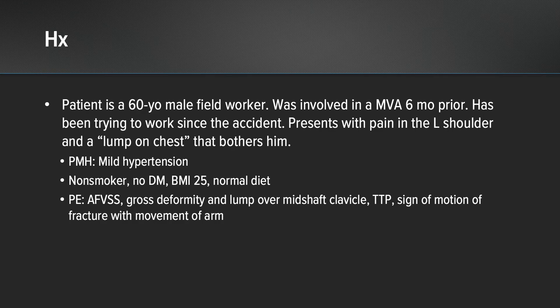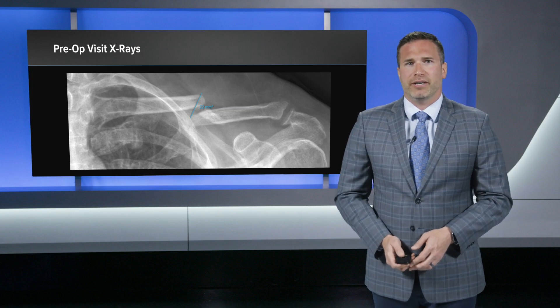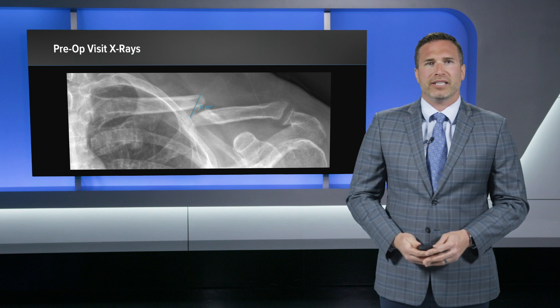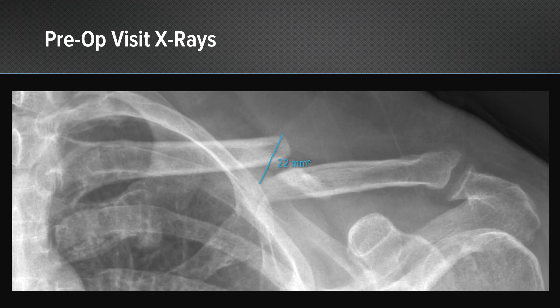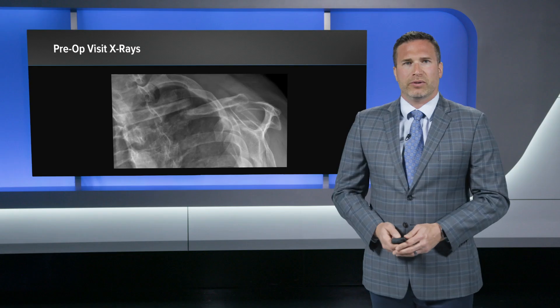On his physical exam, he was afebrile, which further brings infection down as a concern. He has a gross deformity and a lump over the mid-shaft of his clavicle. It is tender in that area and there are signs of motion with the fracture upon movement of his arm. Fortunately, there is no skin compromise or tenting. X-rays taken in my office show a mid-shaft clavicle fracture displaced over two centimeters, with no evidence of fracture callus and no erosive property at the ends of the clavicle, which also lowers my concern for infection.